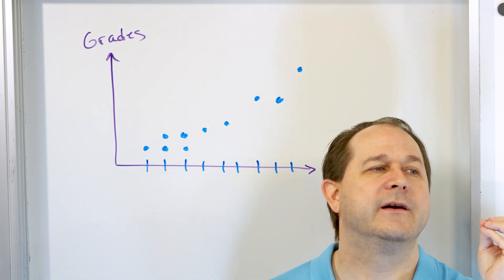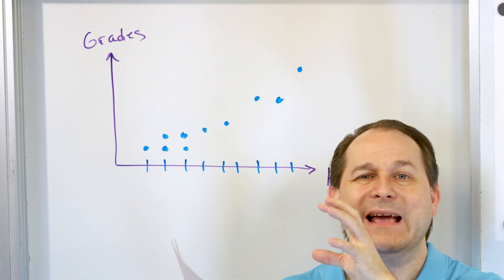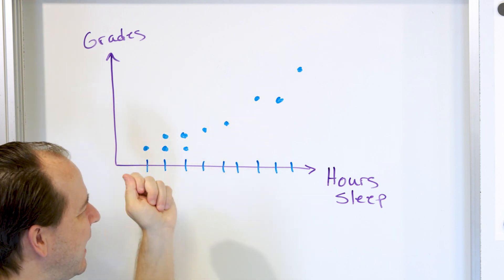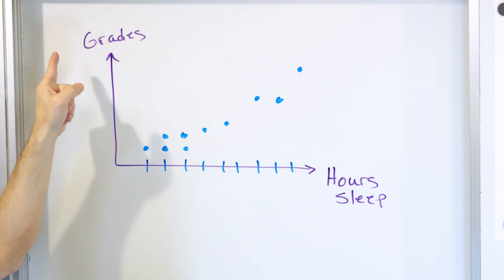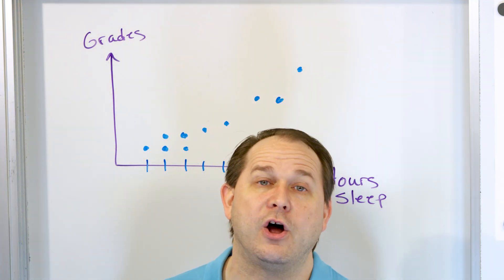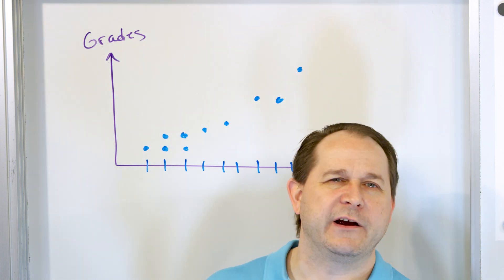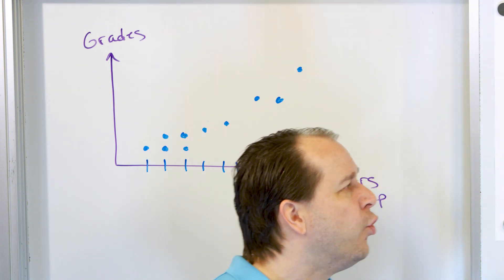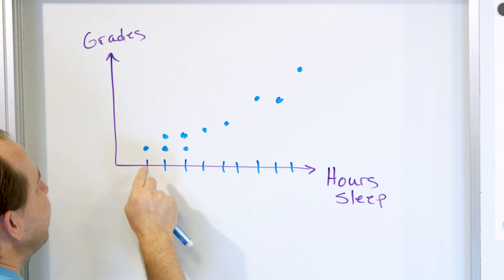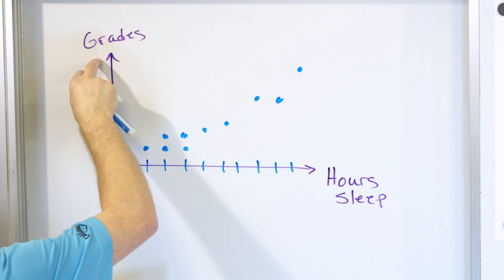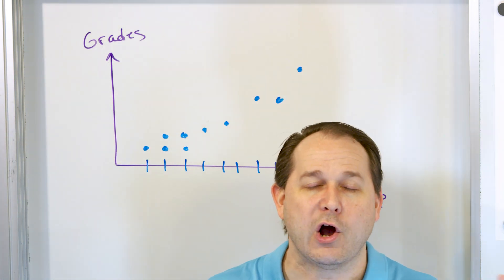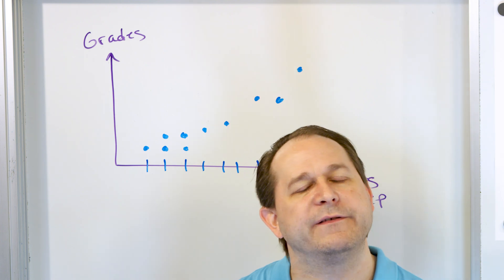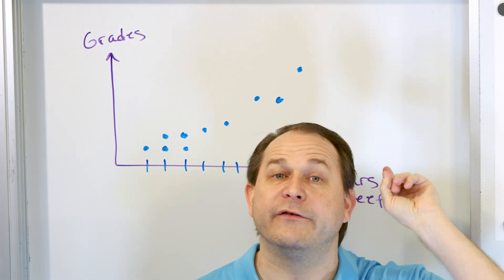Causation is when one event actually causes something else. Just because these data both seem to increase does not actually mean that the number of hours of sleep causes better grades. That's probably the number one fallacy in all of science. All this data is saying is that students who had higher amounts of hours of sleep also got higher grades. But the obvious conclusion — or the wrong conclusion — would be that if you get more sleep, you will get higher grades, because there could be a third reason causing both to increase.